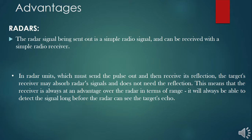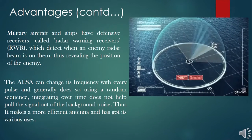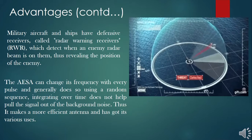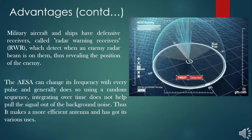The radar signal being sent out is a simple radio signal and can be received with a simple radio receiver. In radar units which must send a pulse out and then receive its reflection, the target's receiver may absorb the radar signal and does not need the reflection. This means the receiver is always at an advantage in terms of range — it will always be able to detect the signal long before the radar can see the target. For that purpose, military aircraft and ships have defensive receivers called radar warning receivers, which detect when an enemy radar beam is on them. But in the case of AESA, it can change its frequency with every pulse, generally using a random sequence.